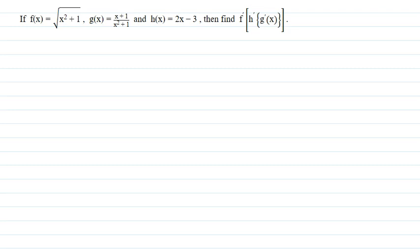Hello everyone, I will be a teacher for this question. Let me explain this question to you. If f(x) is equal to the square root of x squared plus 1, g(x) is equal to x times (x plus 1) divided by x squared plus 1, and h(x) is equal to 2x minus 3, then find f'(h'(g'(x))).